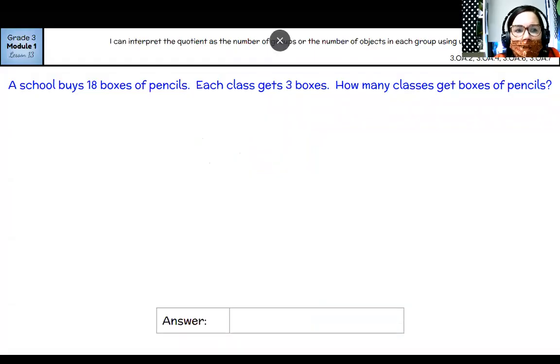A school buys 18 boxes of pencils. Each class gets three boxes. How many classes get boxes of pencils? Okay. So in this one, we know how many are in a group. We know that each classroom gets three boxes, right? And we know there are 18 boxes altogether. So that means that we have to keep drawing classrooms until we run out of boxes of pencils.